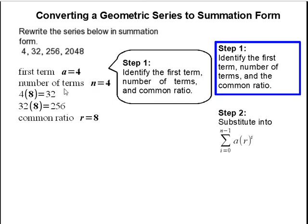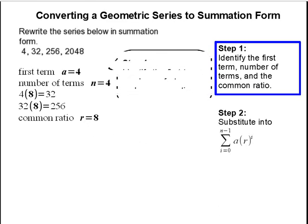Then the common ratio is the number that we multiply to get from one term to the next and in this case it's 8. 4 times 8 gets you 32 and then 32 times 8 gets you 256 and we're going to use r to represent the common ratio.